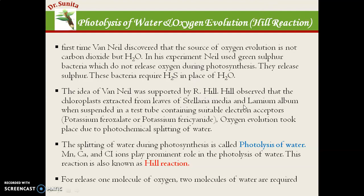Robert Hill extracted chloroplasts from leaves — from plants like Lamium album — and placed them in test tubes. Inside these test tubes there were electron receptors: artificial electron receptors such as potassium ferroxylate and potassium ferricyanide, rather than the natural electron receptor water. In Hill's experiment performed in the test tube, using potassium ferroxylate and potassium ferricyanide, oxygen evolution took place due to photochemical splitting of water.